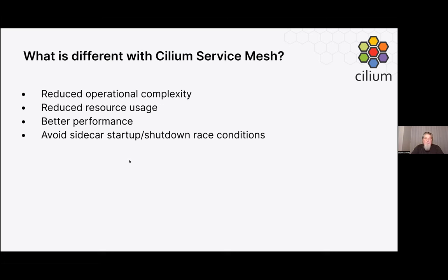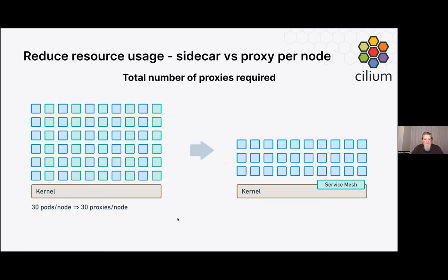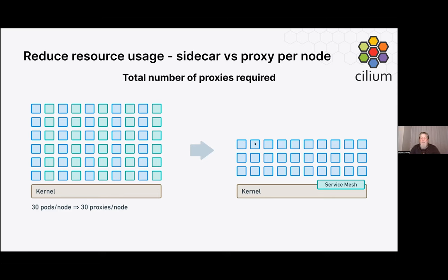We can ensure better performance because we handle things at the kernel layer, and we avoid the sidecar startup and shutdown race conditions seen in other environments. If you had 30 pods and 30 sidecar pods, you'd be talking about 30 proxies per node paying CPU and memory cost every second. Moving to the model where we implement service mesh use cases in eBPF, we can be a lot more efficient.